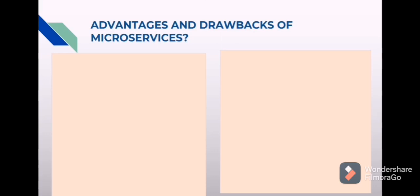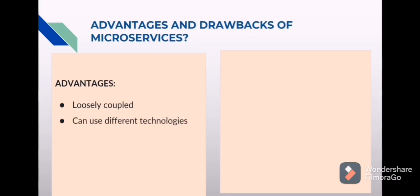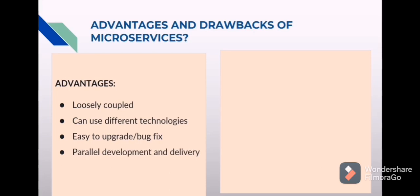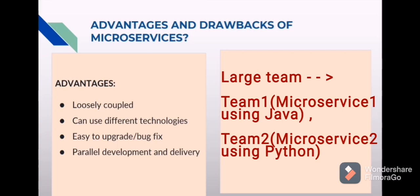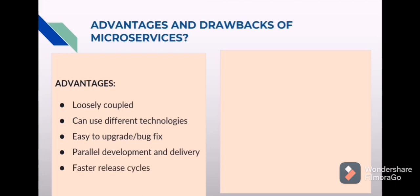What are the advantages and drawbacks of microservices? Advantages: First, loosely coupled — since microservices are independent of each other, the application is loosely coupled. Second, can use different technologies — each microservice can use a different technology; one microservice can use Java, another can use Python. Third, easy to upgrade or bug fix because of individual deployments. Fourth, parallel development and delivery — we can divide our large team into small teams and work in parallel. Because of parallel development, release cycles can be faster.